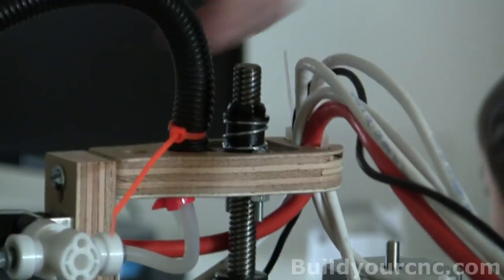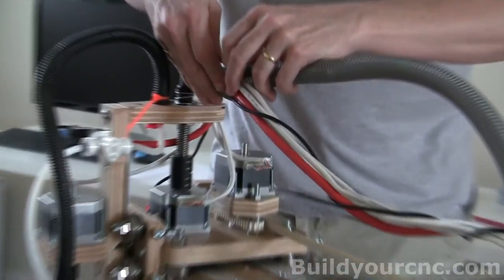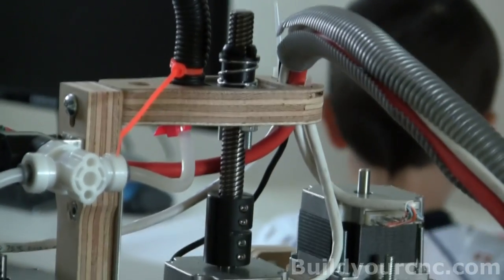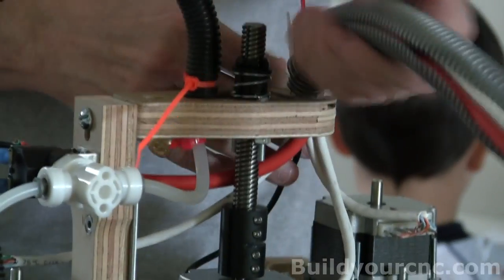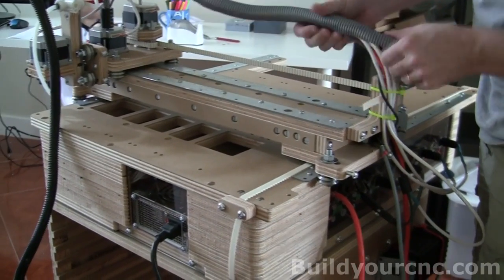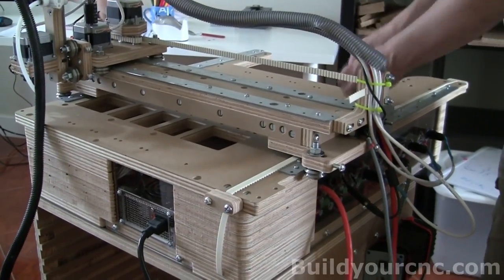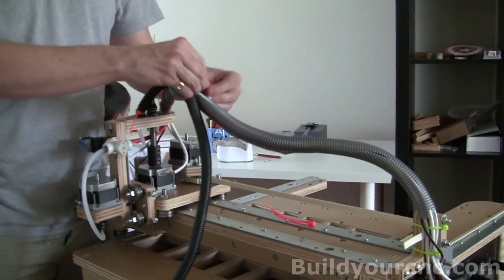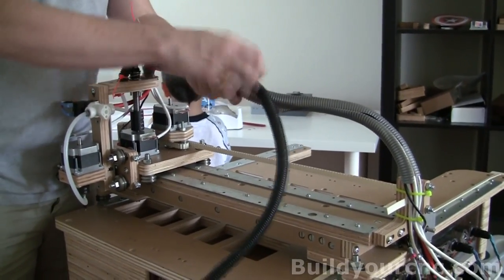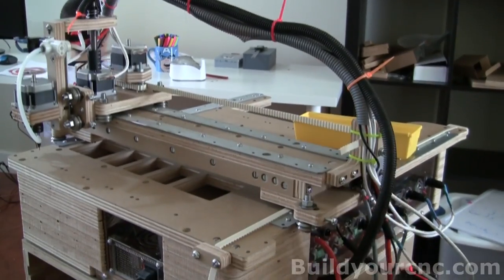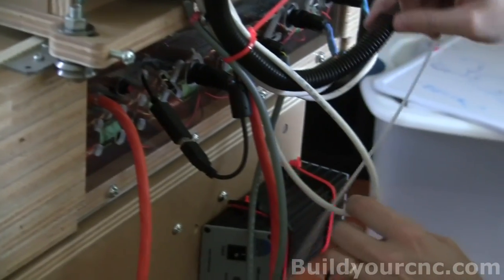I'm going to actually do the conduit around here first. Let's see if all of these wires can fit in the small conduit. It should be fine. I'm going to wire tie the end here so it stays clipped.